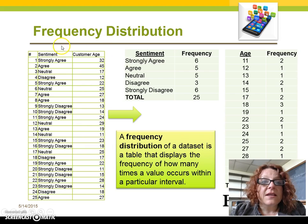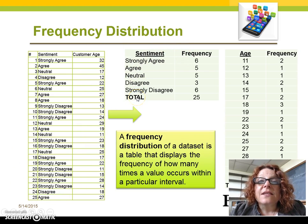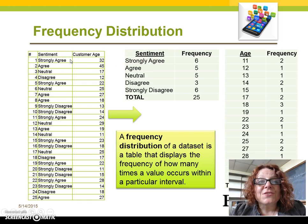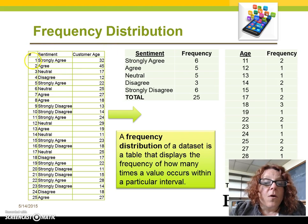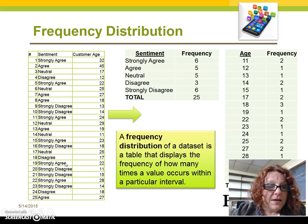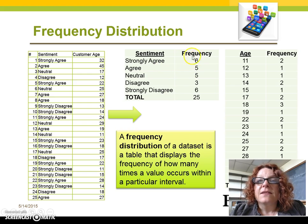Just looking at this table doesn't tell us very much. So let's start counting the frequency of our customer ratings or of our customer sentiment. Let's see how many customers strongly agree that our app is truly great. Counting through, six customers strongly agree that our app is really great.